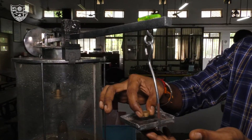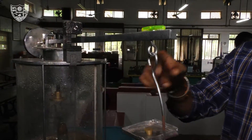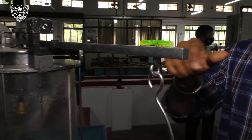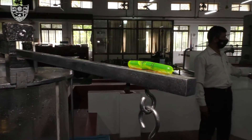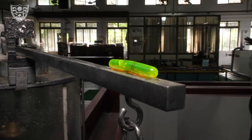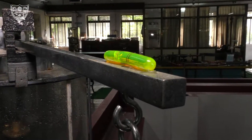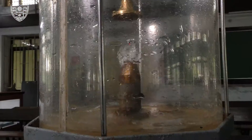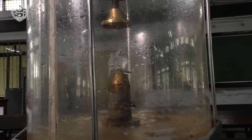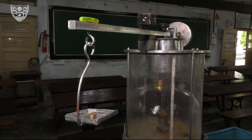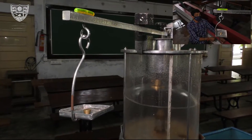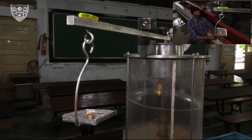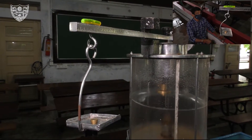Place the weight on the weight pan. Switch on the pump and open the inlet valve, then set the flow rate such that the vane is stationary. Check again for a balanced rod by adjusting the flow rate.